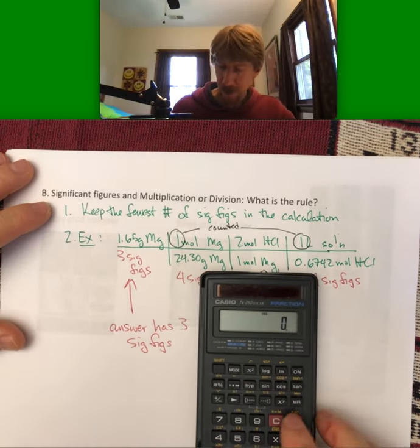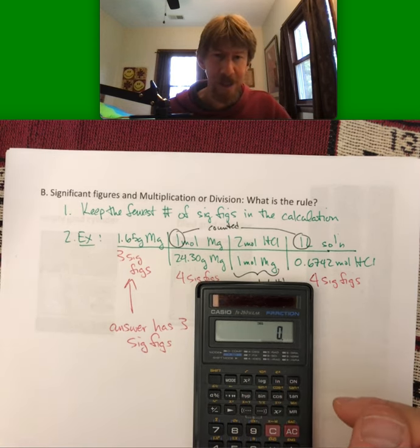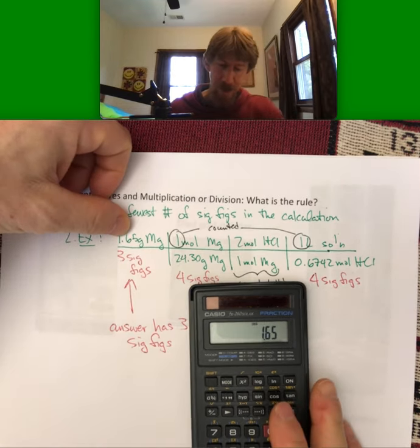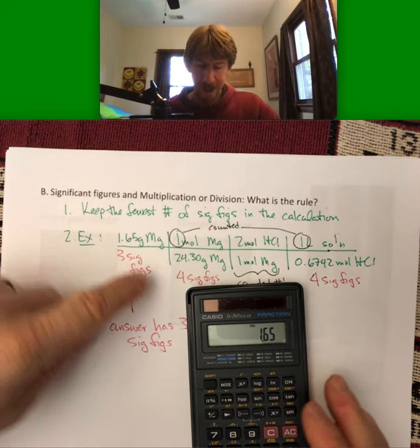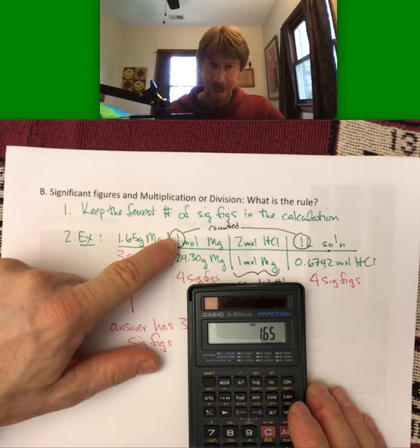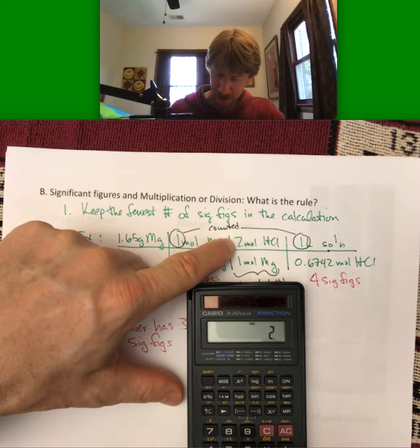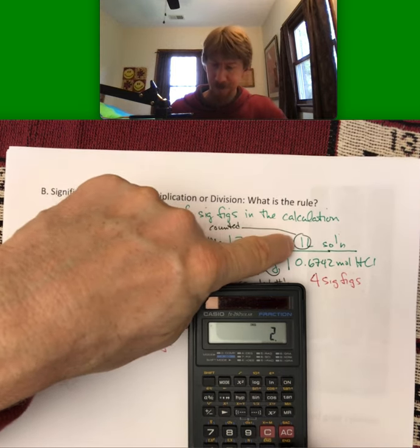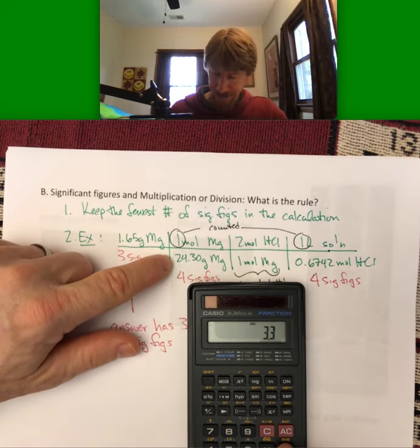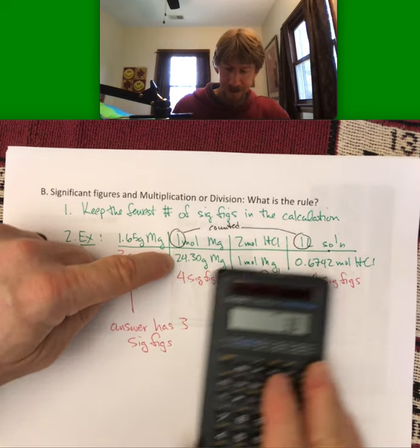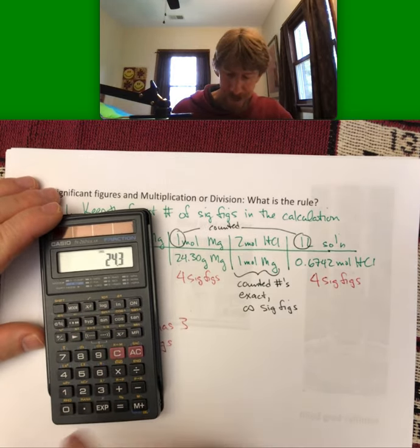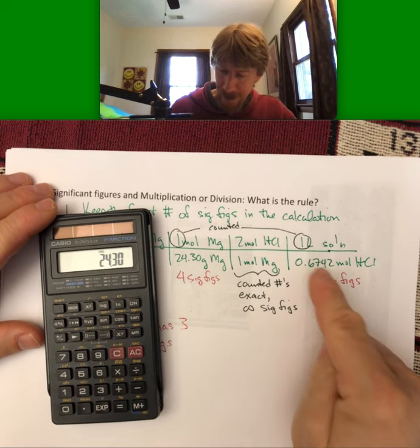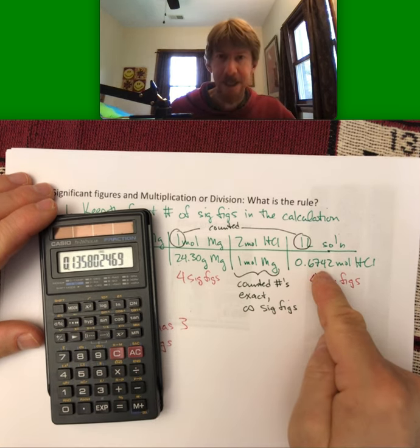Just to show you what that answer will be - we don't know how to do this calculation yet, but we will see it in this course. I like to multiply all the numbers across the top first, then divide by all the numbers on the bottom. So 1.65 times one times two times one, then divide by 24.3. I don't need that last zero for the calculator. And then divide by 0.6742.